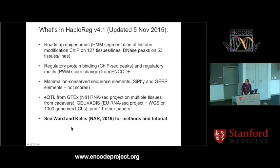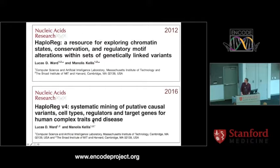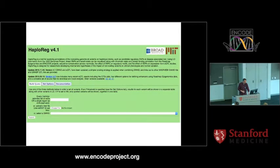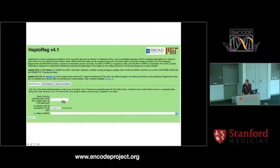The initial paper was published in 2012, and more recently there's been another update with updated ENCODE data, updated Roadmap Epigenomics data, more motif data, and links to eQTL studies. One very useful thing to point out is that if you look at the latest NAR paper, it actually contains a very short but sweet tutorial that takes you step by step through the process of using HaploReg for a particular study of interest.